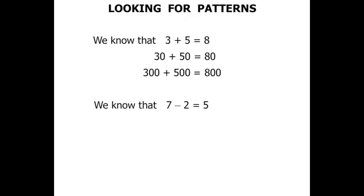We also know that 7 minus 2 equals 5. We can extend that idea and say that 70 minus 20 equals 50. The 7, we took away the 2, we get the 5, and we put the zero on at the end.